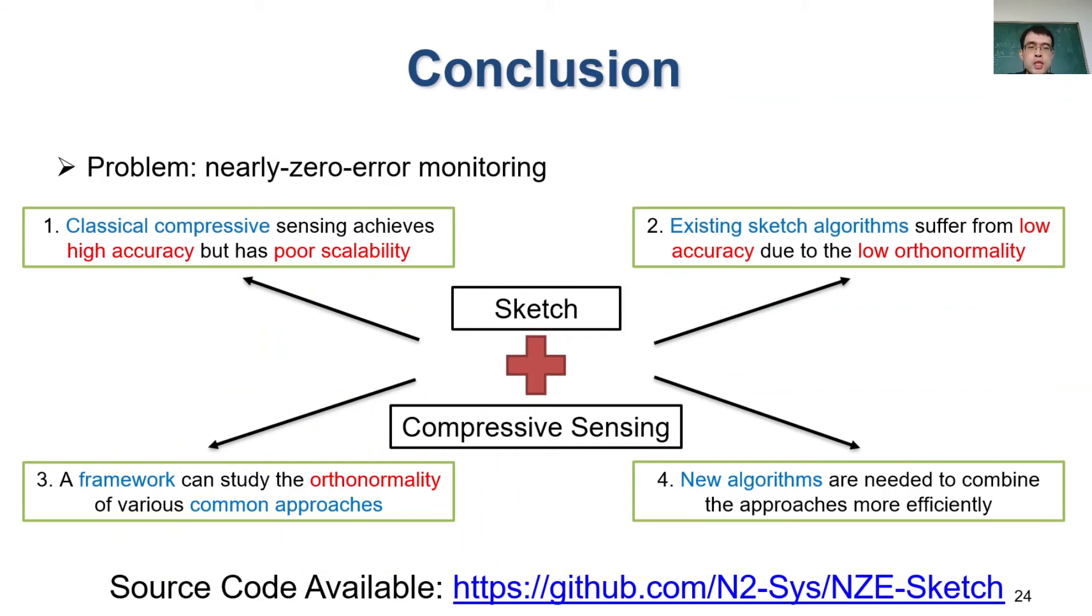To conclude our work, we consider the problem of nearly zero-error sketch. Our key idea is to introduce compressive sensing in the sketch design. And since direct using compressive sensing is not scalable, we formulate sketch algorithms and study their properties. In particular, we investigate the efficiency of common approaches in sketch algorithms and use the results to guide the design of two new algorithms. We believe that our work can provide new theoretical framework to study sketch algorithms in the future.